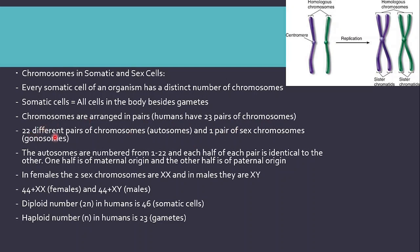In these pairs, there are 22 different pairs of chromosomes which are the autosomes, and then there is one pair of sex chromosomes which we call the gonosomes. The autosomes are numbered from 1 to 22, and each half of each pair is identical to the other — one half is of maternal origin and the other half is of paternal origin. What makes chromosomes a homologous pair is they are the same size, same shape, and code for the same characteristics.